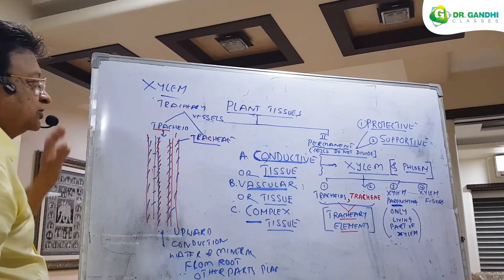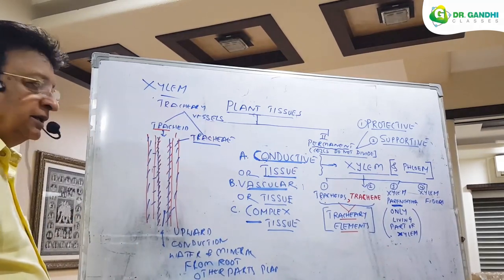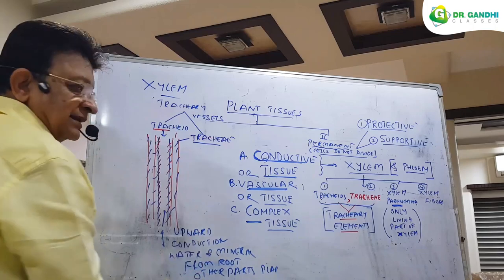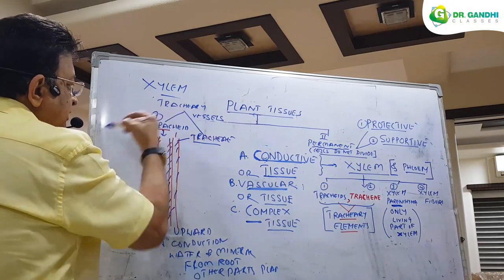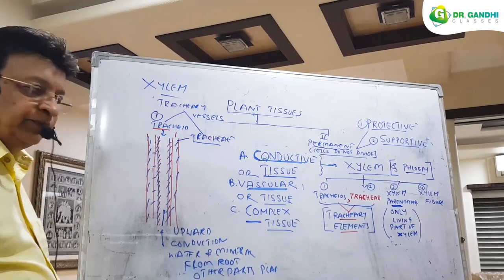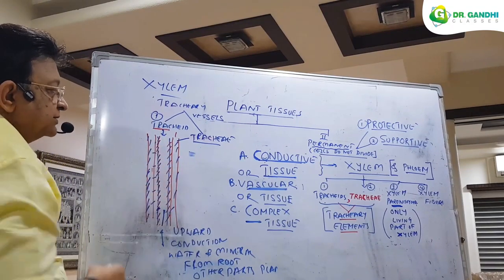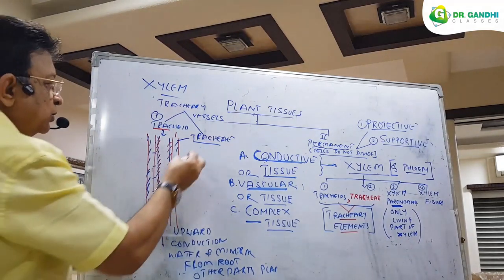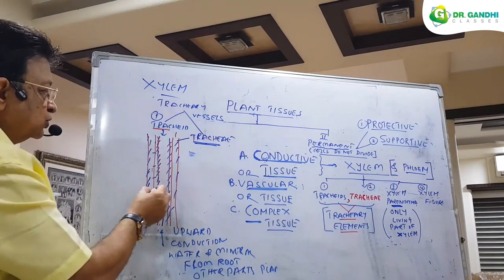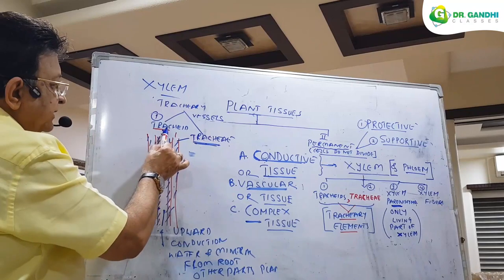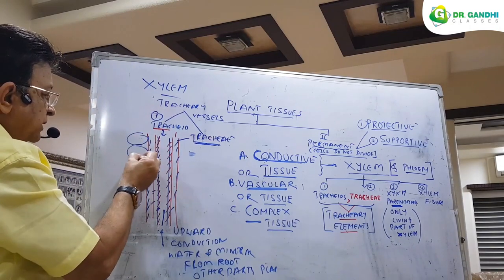To recap: the function of xylem is upward conduction of water and minerals from the root to other parts of the plant. The xylem is located in the pit, the central part of the plant, with the outer part being the bark. It is made up of the first tube-like vessel known as trachea, whose walls contain lignin and are lignified to give mechanical strength. Next to it is a vessel called tracheae, also with lignified walls, which also helps in upward conduction. Collectively, trachea and tracheae are known as tracheary elements.